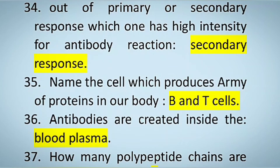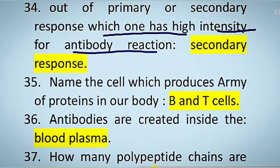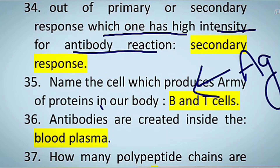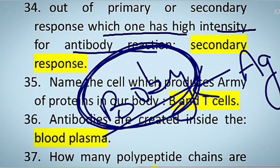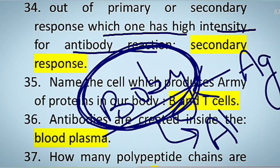Out of primary and secondary responses, which one has high intensity for antibody reaction? Now, an antigen — which we call Ag — is any foreign particle that enters the body and initiates our immune system, causing antibodies to be produced.